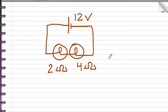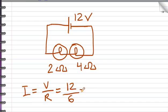We can use Ohm's law to calculate the current. Current equals voltage divided by resistance, 12 divided by total resistance is 6, gives me 2 amps of current.